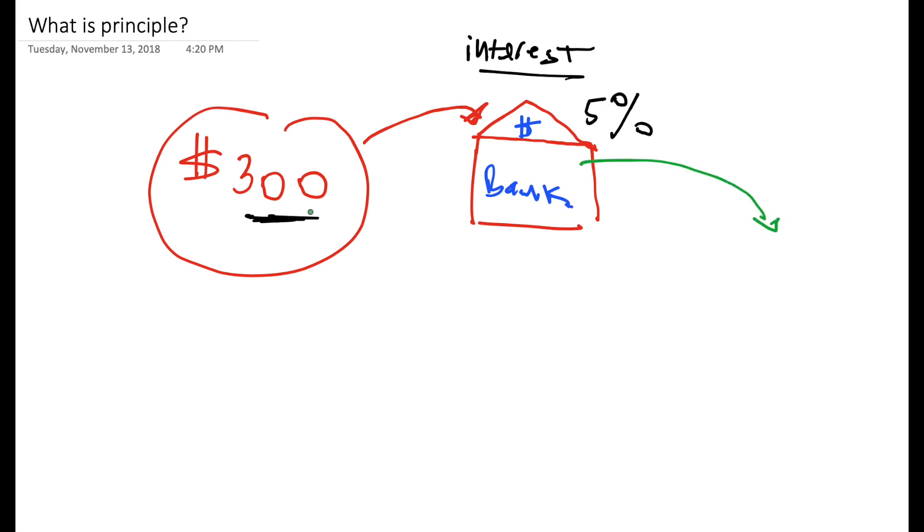Well, I know 5% of 100 is 5. And there's three of those. So now I actually know that in one year, you're going to make $15. Interest. And that's with 5%? Oh, no. So what is the thing that the interest is applied to? The 300. Yeah. The thing that your interest is applied to is called your principle.